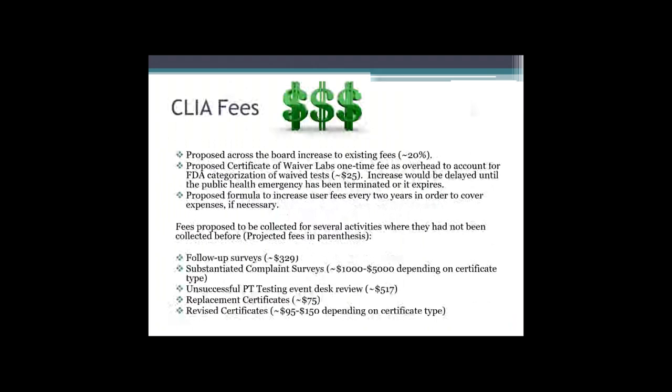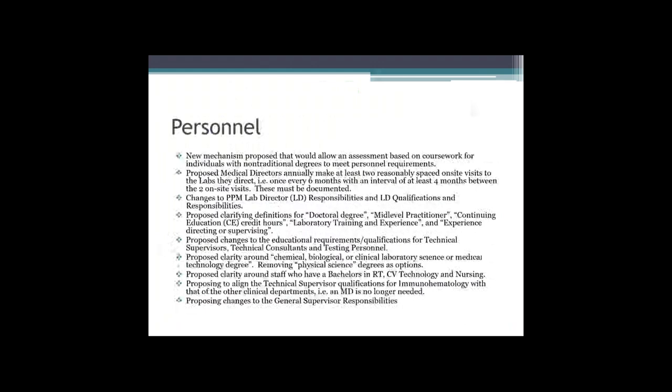Replacement and revised certificates will now have a fee associated with them if you are requesting a new certificate to be generated — currently there is no charge for this. Surveys and desk reviews of unsuccessful PT will now also have a charge associated with them if the proposed rule is finalized as is. The main reason for these increases is so that the CLIA program can continue to sustain itself — CMS has determined that if it does not increase fees, it will not be sustainable. The main area that the proposed rule really addresses is personnel, which is one area of the CLIA rule that has needed attention for quite some time as it has put much burden on laboratories.